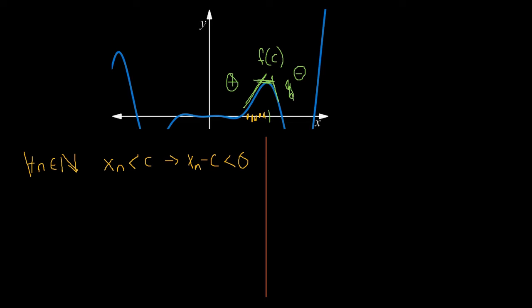Similarly, on the right side, we may have a sequence y_n, here's our sequence y_n, and again, for all natural numbers, in this time, c is strictly less than y_n, which implies that y_n minus c is greater than zero. You might see where I'm going in just a second, but recall that f(c), we're assuming, is a maximum value.